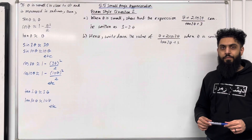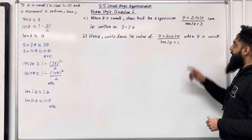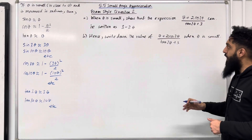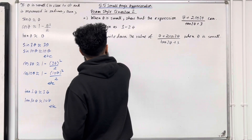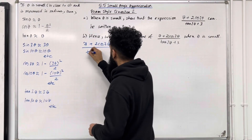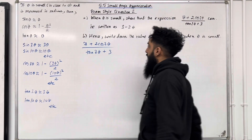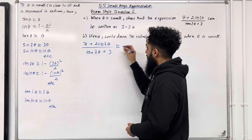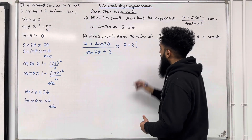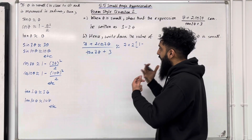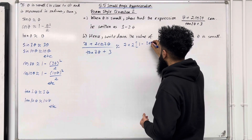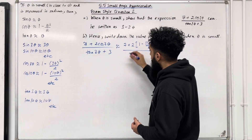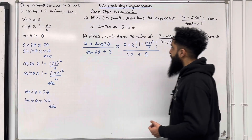Moving on to exam style question 2, part A. When theta is small, show that (7 + 2cos 2θ) over (tan 2θ + 3) can be written as 3 minus 2θ. This fraction is approximately equal to 7 plus 2[1 minus (2θ)²/2] all over 2θ plus 3. Simplifying inside the bracket gives 1 minus 2θ², and tan 2θ is approximated as 2θ.